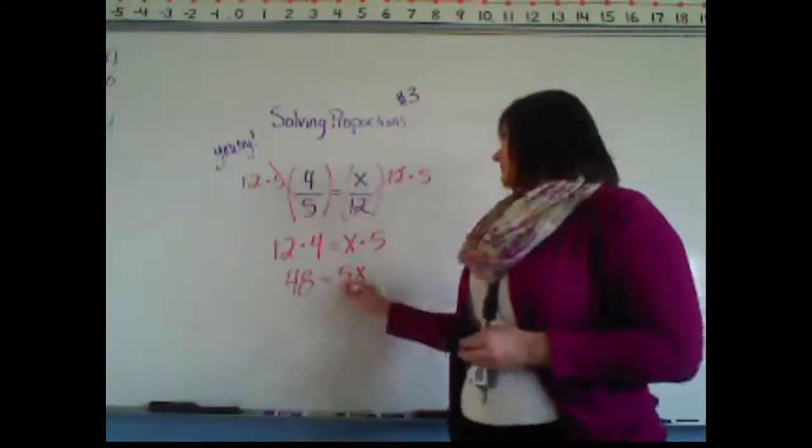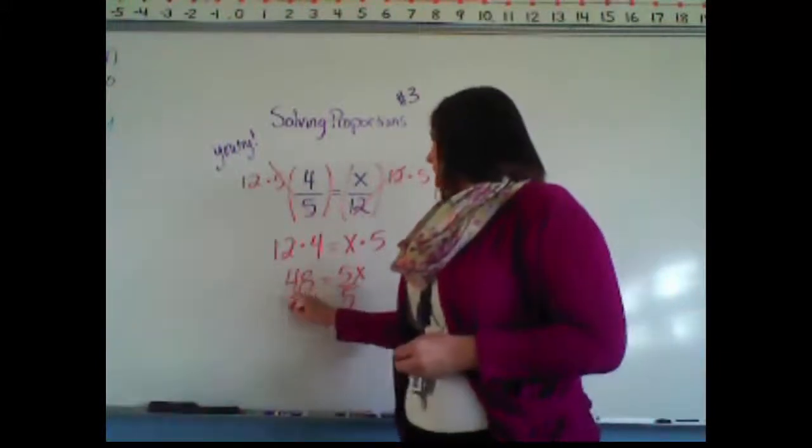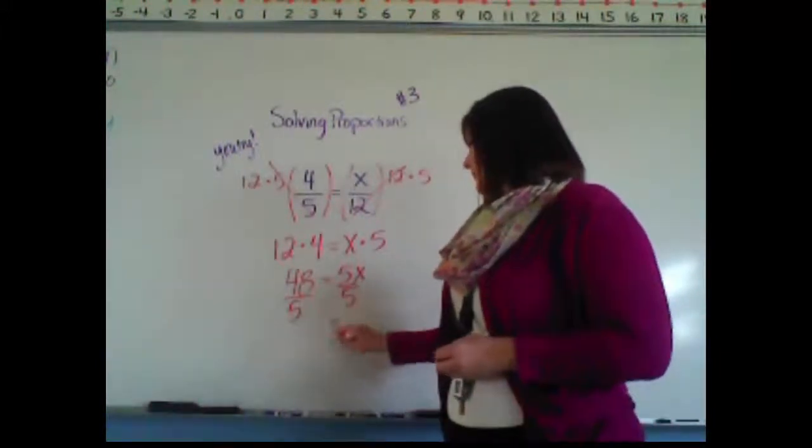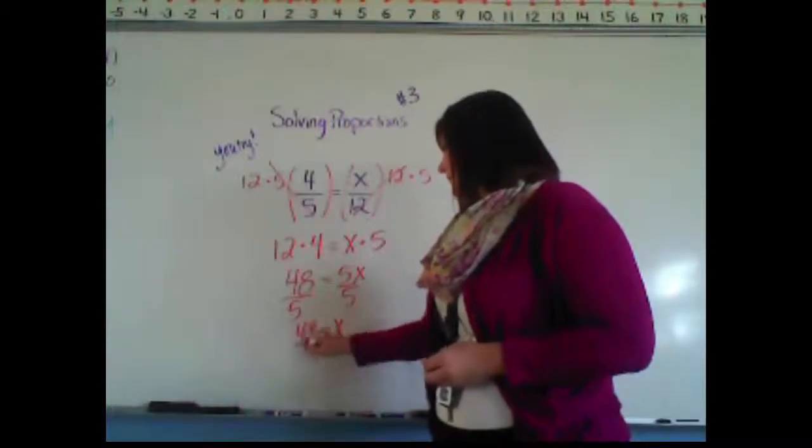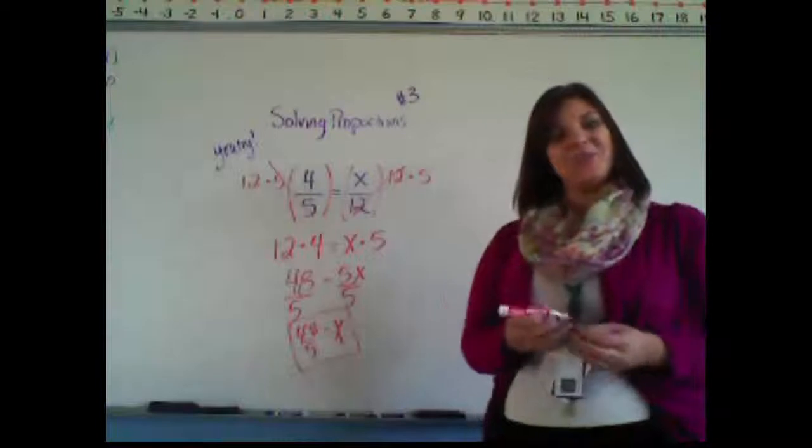Go ahead and divide both sides by 5. And there we have it. x is equal to 48 over 5. How did you do?